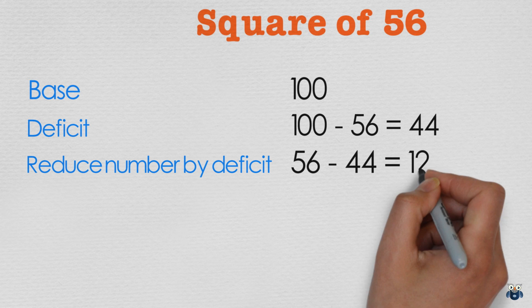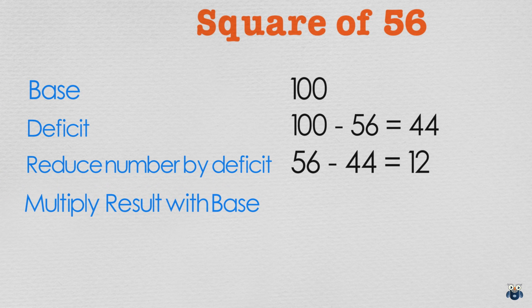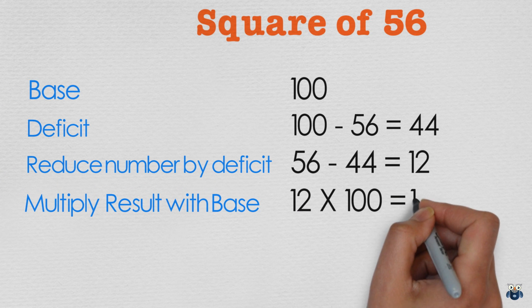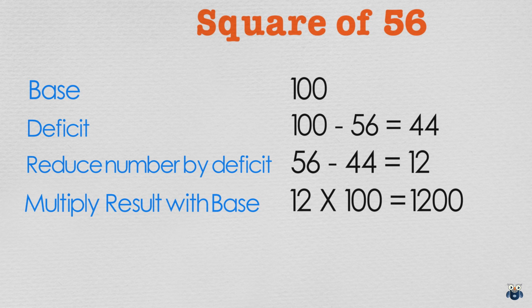56 minus 44 is 12. We then multiply this result with our base. 12 times 100 is 1200. So far so good. We then need to square our deficit.